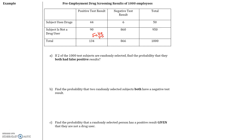Now we're selecting two subjects — the first subject and the second subject. What is the probability that the first subject got a false positive? Remember, probability is the number of false positives — we have 90 subjects who got a false positive — divided by the total number, which is 1,000. So the probability that one of them got a false positive is 90 over 1,000.